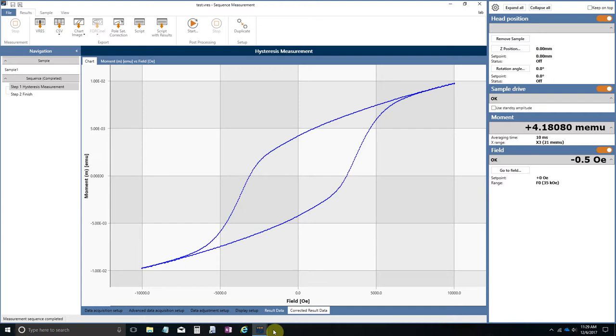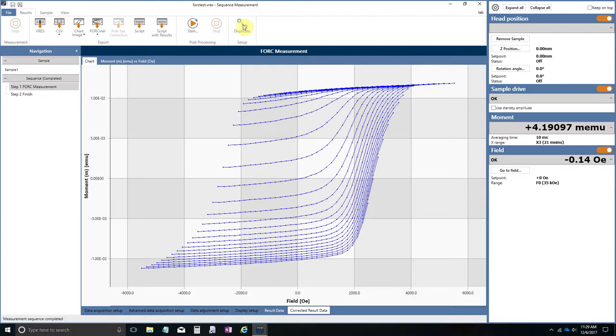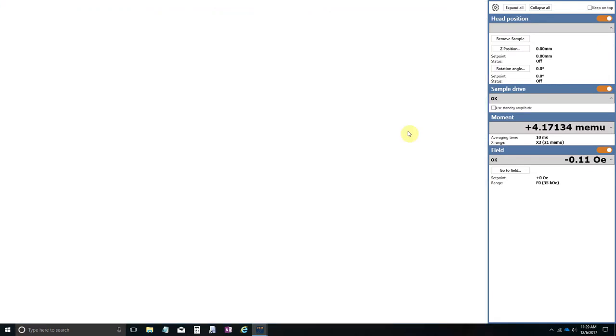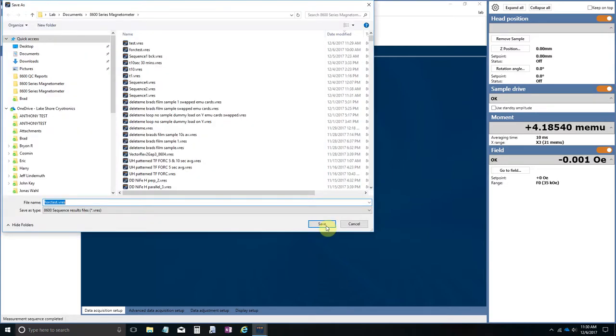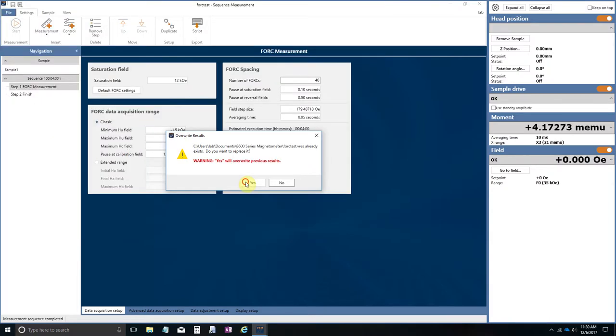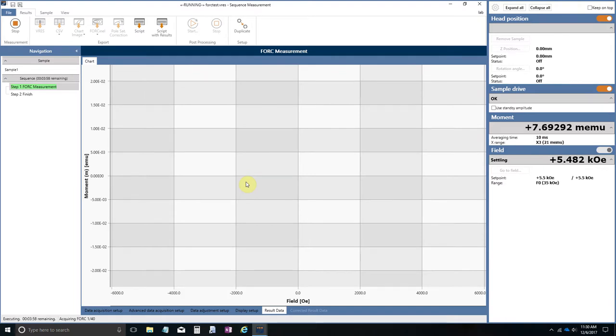And then the other thing I wanted to show you is a typical series of first-order reversal curves. In this case, I've set up my FORC parameters as shown here. I'm actually recording 40 different first-order reversal curves. I'm averaging for 50 milliseconds. The estimated execution time here is 4 minutes.